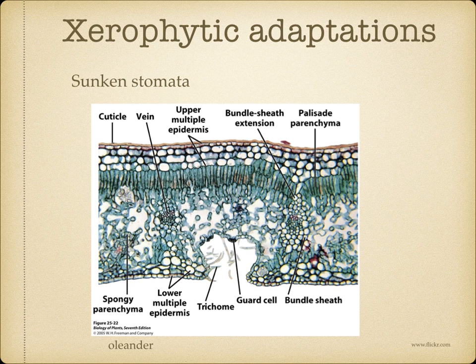Sunken stomata — for example, in pits or grooves, as you can see in this picture. These stomata are sheltered from air movements, and they trap moist air next to the leaf, reducing the water potential gradient.